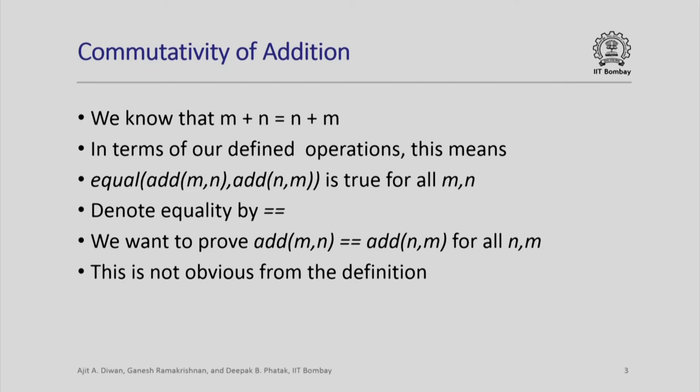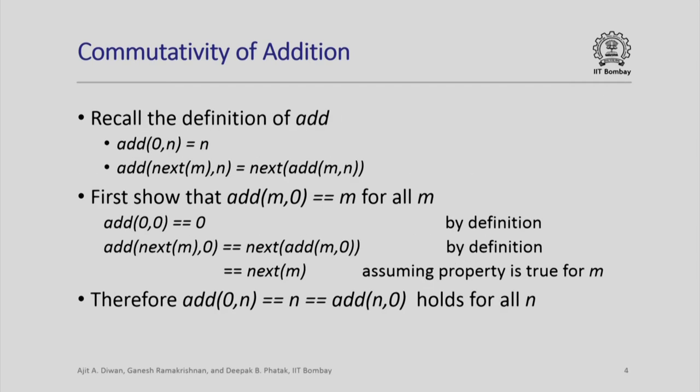For simplicity, we will denote equality by the double equal sign as in C++ and just call it equal. So, what we want to prove is that add(m,n) is equal to add(n,m) for all numbers m and n. This is not obvious from the definition because the definition is not symmetric in m and n.